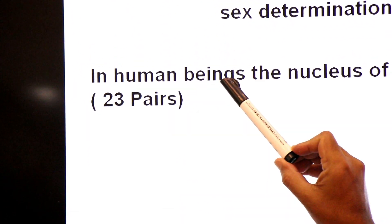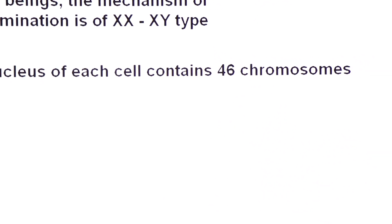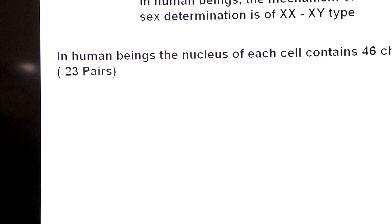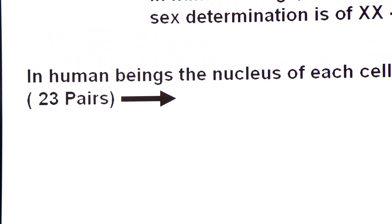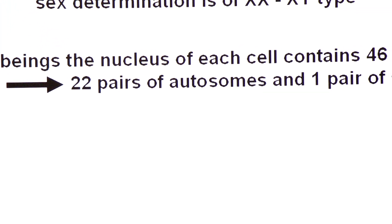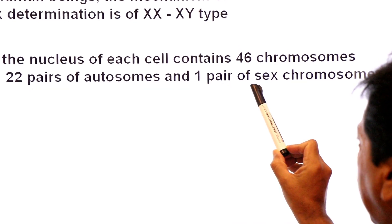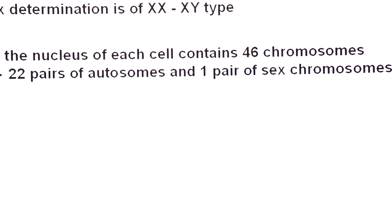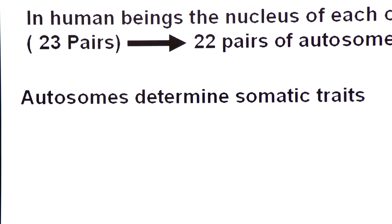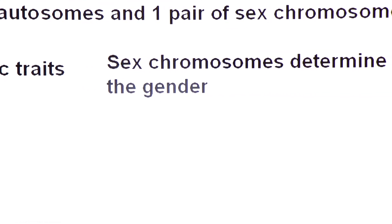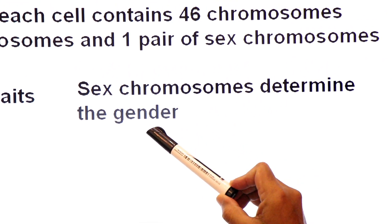In human beings, the nucleus of each cell contains 46 chromosomes — 22 pairs of autosomes and one pair of sex chromosomes. Autosomes determine somatic traits, body traits, and the sex of an organism is determined by sex chromosomes. So the sex chromosomes determine the gender.